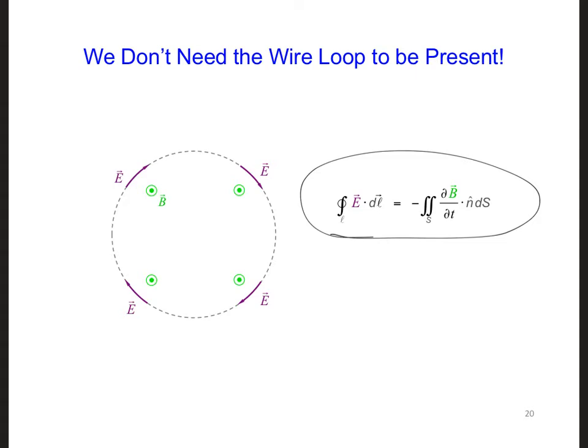In plain language, this equation says that a time varying B field generates an electric field that forms closed loops around the B field vectors. And this holds in both free space or in any material.